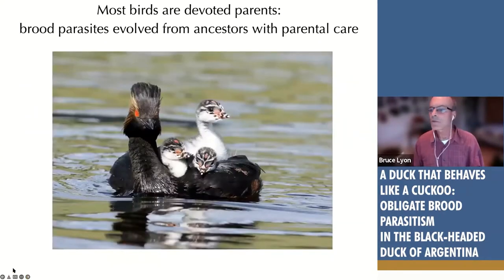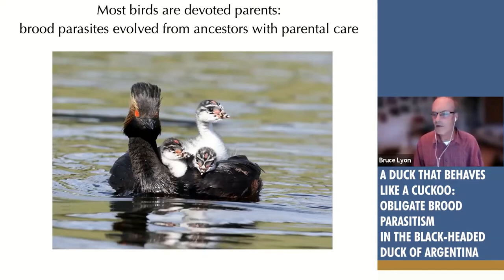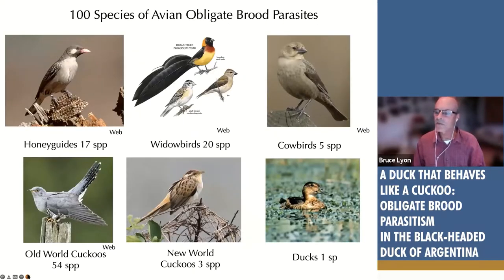In terms of how this evolves, these parasites have all evolved from ancestors that cared for their offspring. What they've evolved is a loss of parental care, foisting their offspring off onto other species. In birds, the species that lay their eggs in other birds' nests professionally — called obligate brood parasites — number around 100 species.